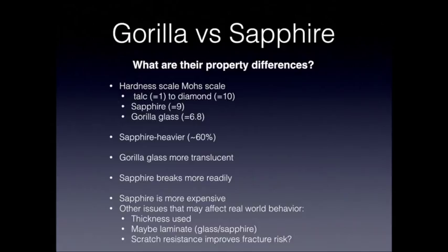Now that we've talked about production methods, let's look at property differences. The first is hardness, typically scored with the Mohs scale — talc being the softest at 1 and diamond the hardest at 10. Sapphire glass comes in at 9, so diamond is essentially the only naturally occurring substance harder than sapphire. Gorilla glass measures about 6.8, roughly the hardness of quartz.